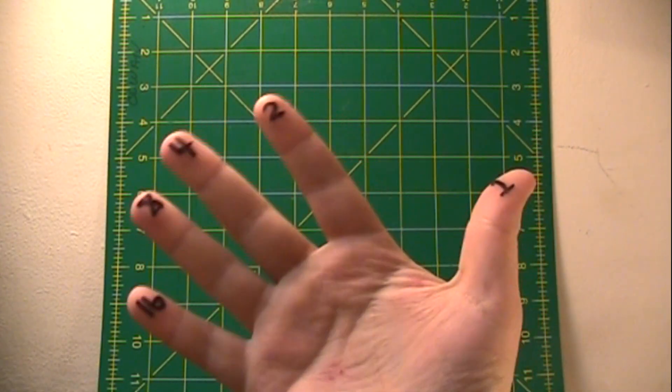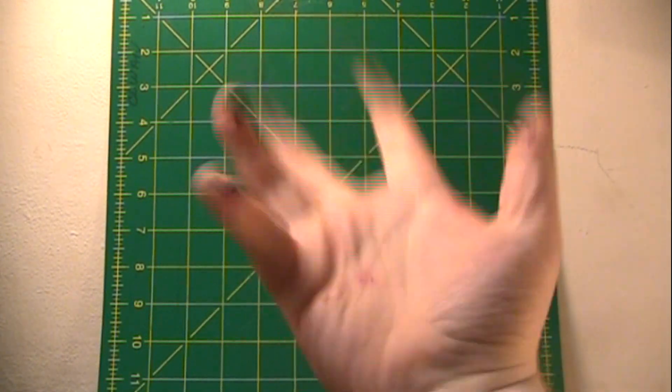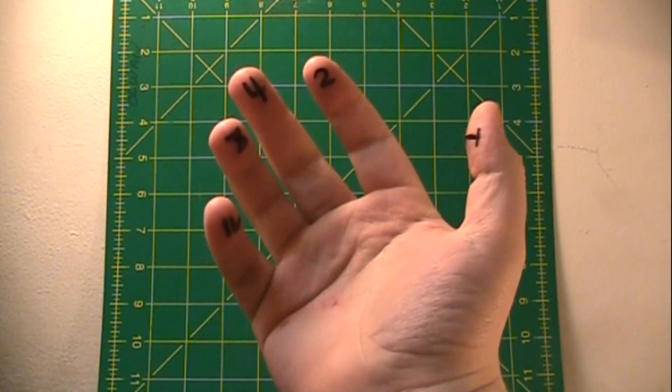So as you get used to this, you won't need to see the numbers, you'll just know what each finger represents, and you'll be able to keep track of number information a lot easier.